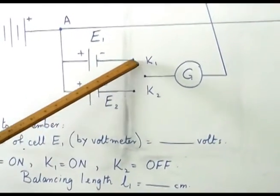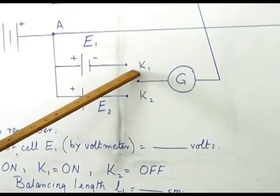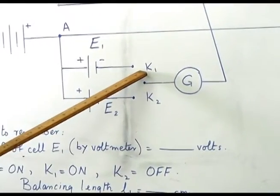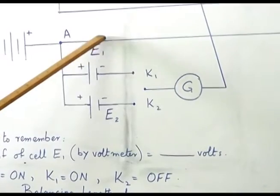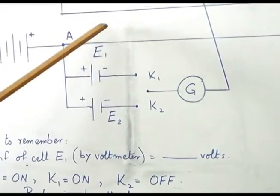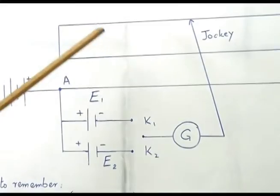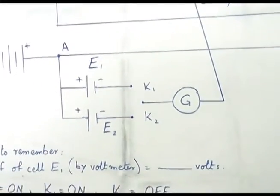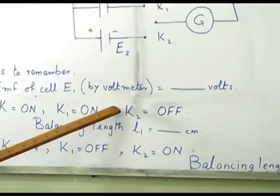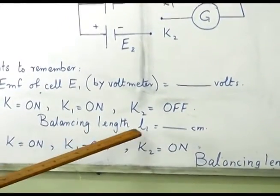Then, K1, this is K1. This K1, it should be on. When this K1 is on, it means that this cell E1 is included in our circuit. And K2 should be off. This is the condition for finding balancing length L1.